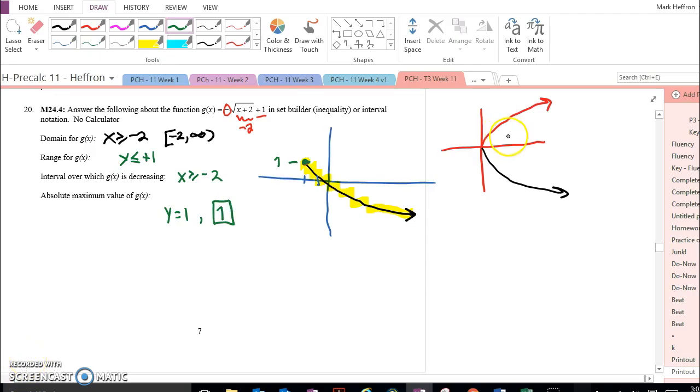It all starts with your graph, though, making sure you know what the square root looks like, and then you can transform it.